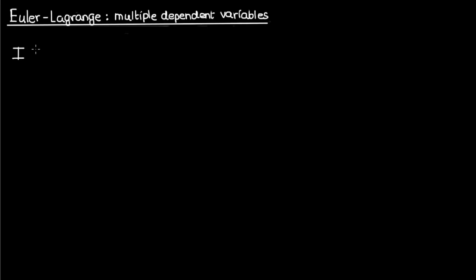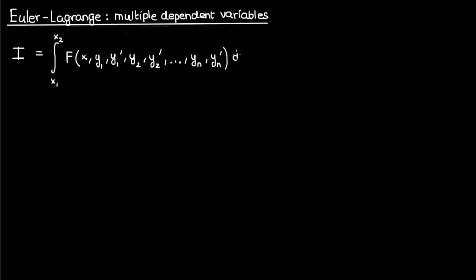Suppose I had a functional I which consisted of an integral from x equals x1 to x equals x2 of F, which was an expression involving x, y1, y1', y2, y2', all the way to yn and yn'. In other words, instead of having just one dependent variable y and its derivative y', I now have n dependent variables as well as each of their first derivatives.